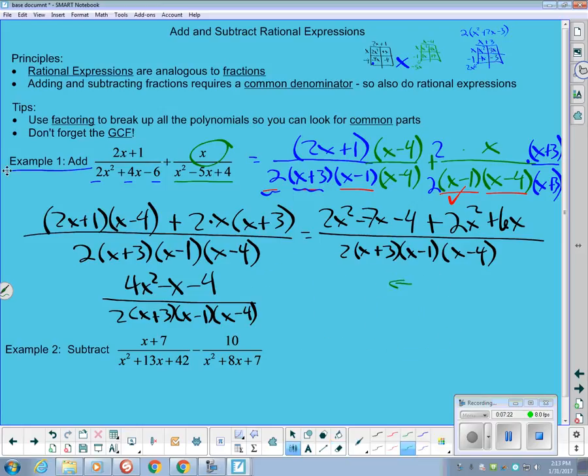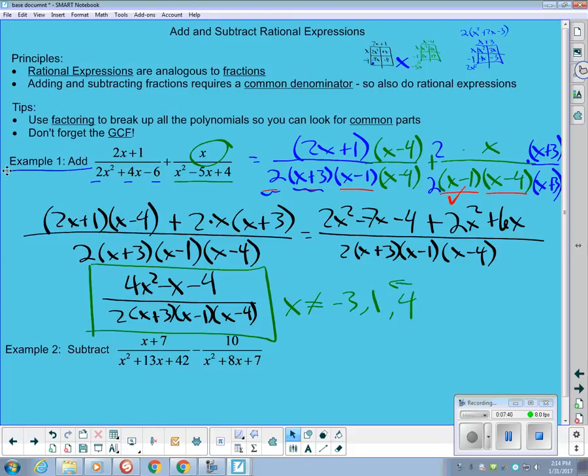So I'm going to leave this as the final version of my answer, that is those added together. We can see from here that x cannot be -3, 1, or 4 based on our previous examples of how to do domains of rational expressions. Okay, so that is our first one.